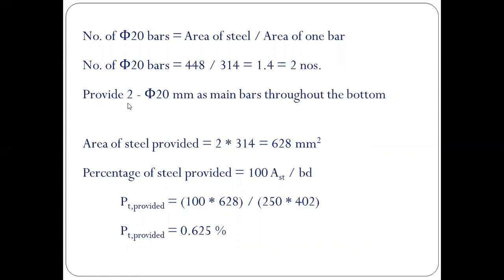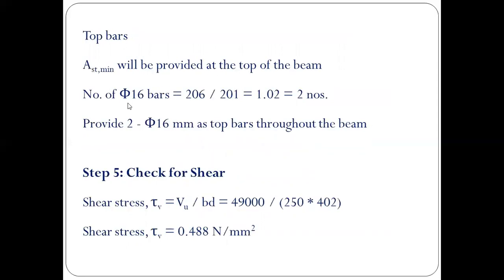Area of steel provided = 2 × 314 = 628 mm². Percentage of steel pt = 100 × Ast/(b×d) = 0.625%. For top bars, the minimum Ast = 206 mm² is provided using 16 mm bars. Number of 16 mm bars = 206/201 = 1.02, so provide 2 × 16 mm bars at the top throughout the beam.